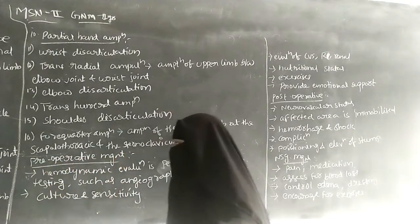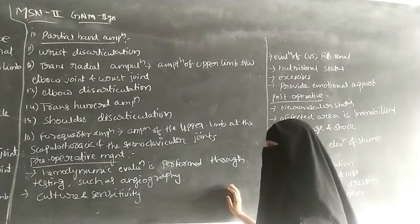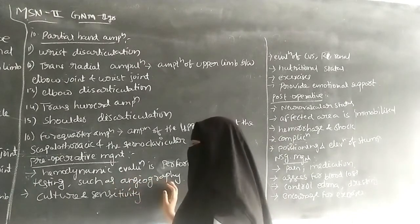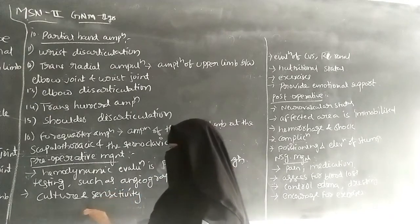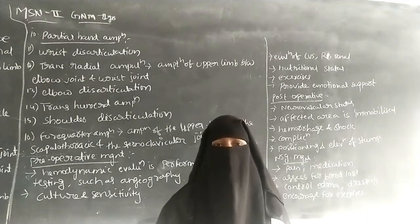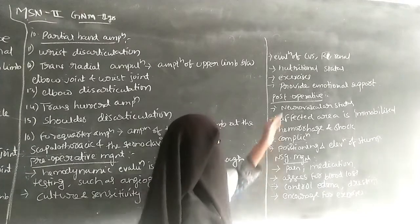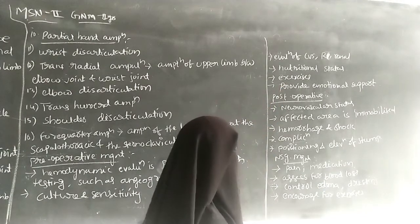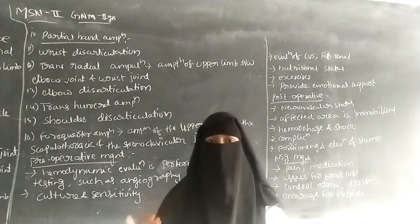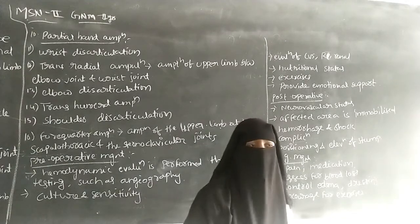Next is preoperative management. A hemodynamic evaluation is performed through testing to determine whether circulation is present to the affected part — this can be identified using tests like angiography. Culture and sensitivity is also performed if the patient has any infection, to identify the organisms present. The nurse also evaluates the cardiovascular system, renal system, and respiratory system before surgery.